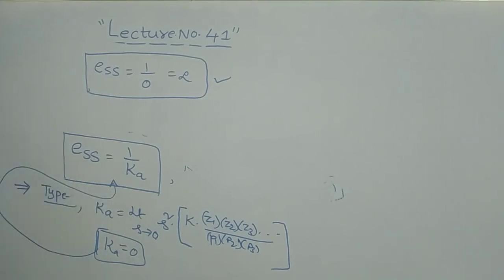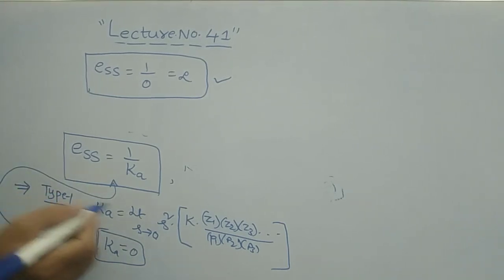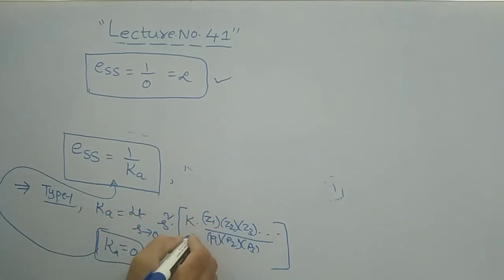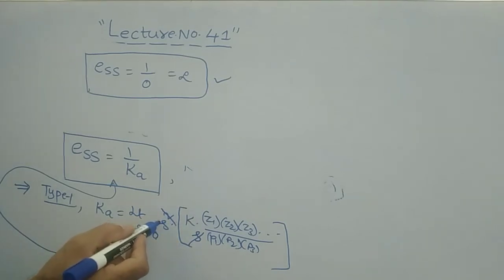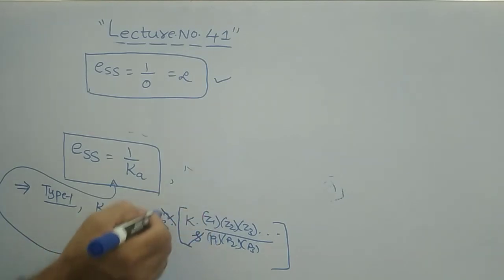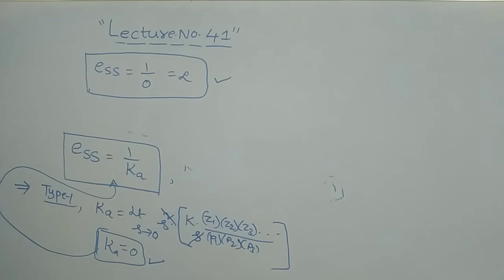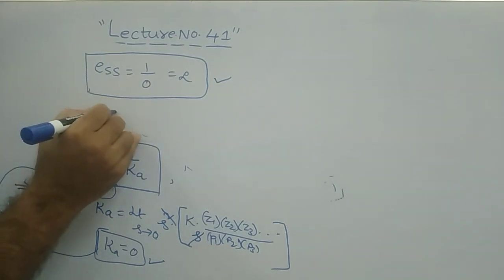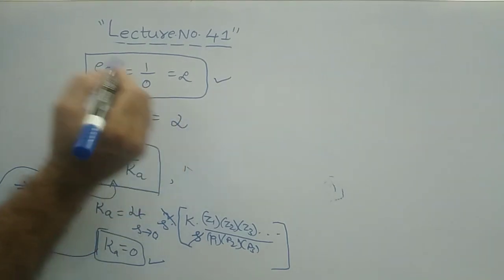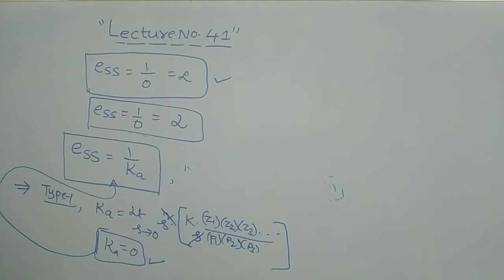For a type 1 system, G(s)H(s) has s power 1 in the denominator. In the Ka formula with s squared in the numerator, one s cancels out leaving one s remaining. Substituting s equals 0 again gives 0, so Ka equals 0. Therefore, ESS equals 1/0 which is infinite. For type 1 system with unit parabolic input, the steady state error is also infinite.